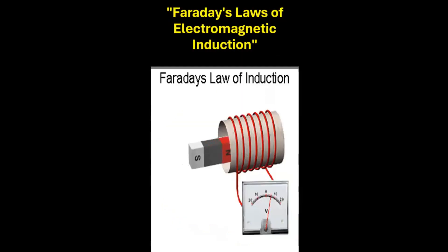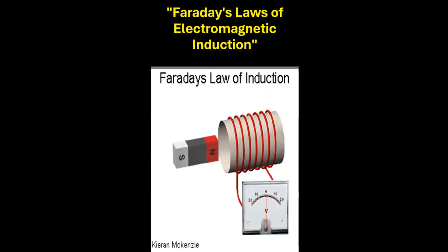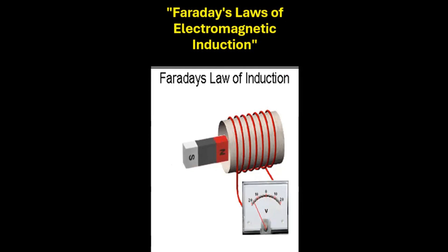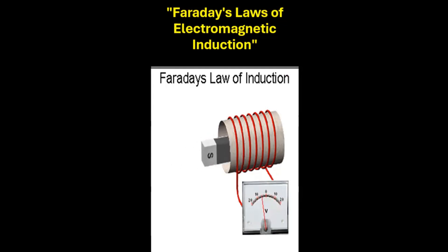It's governed by two laws. Faraday's first law states that when a magnetic field changes near a conductor, it induces an electromotive force which causes an electric current to flow in that conductor. In simpler terms, moving a magnet near a wire makes electricity flow in the wire.